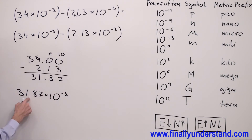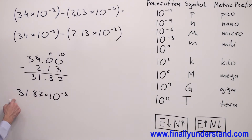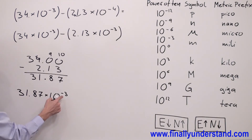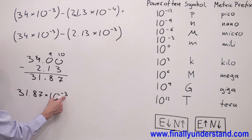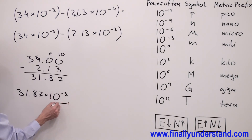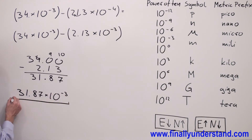The number on the left side of the decimal point is between 1 and 999, and the exponent of the power of 10 is a multiple of 3. That's why this is the correct answer to my problem.